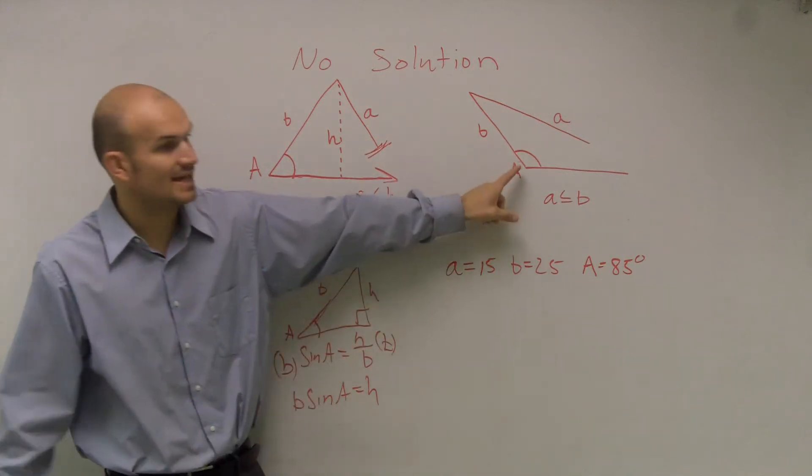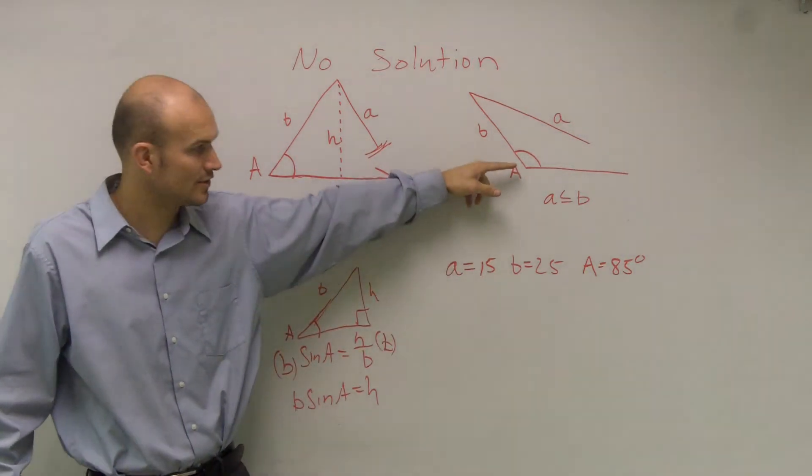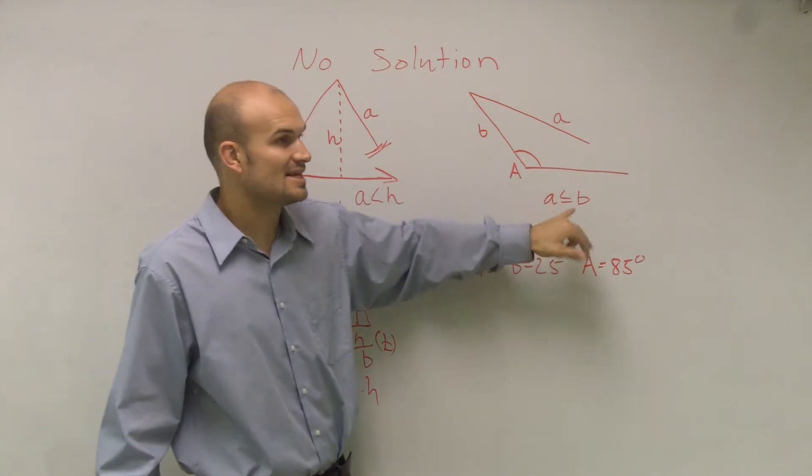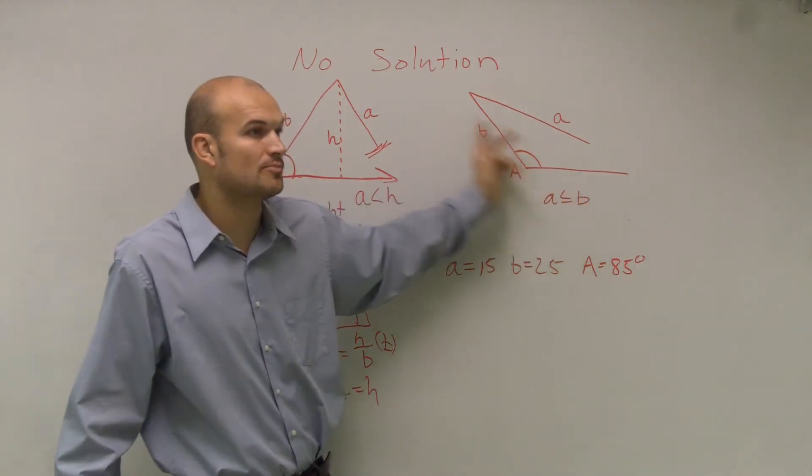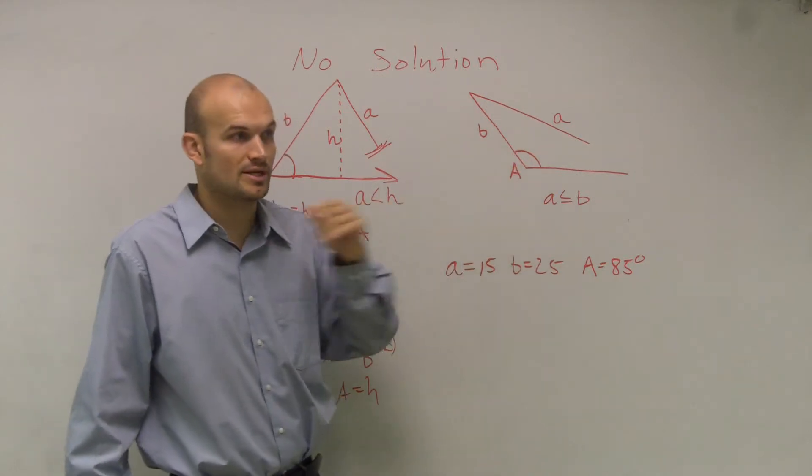Now, if A is obtuse, larger than 90 degrees, and it's less than or equal to your B, not your height, but it's less than or equal to your B, then it's also going to be no solution case.